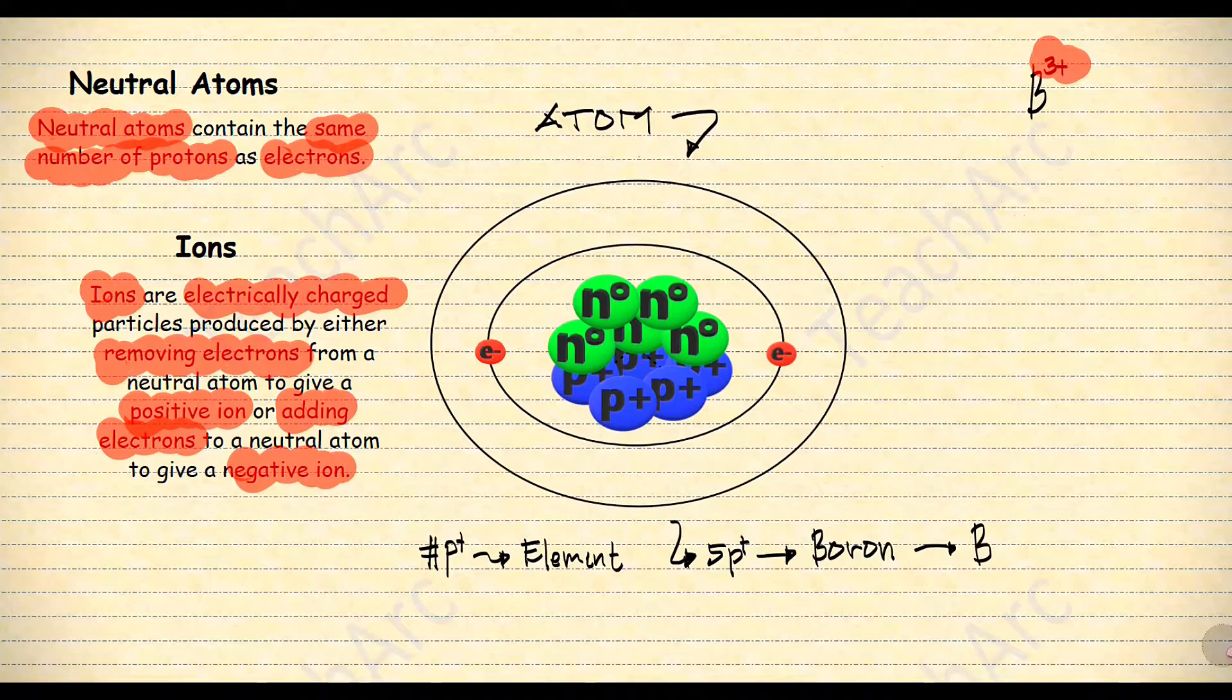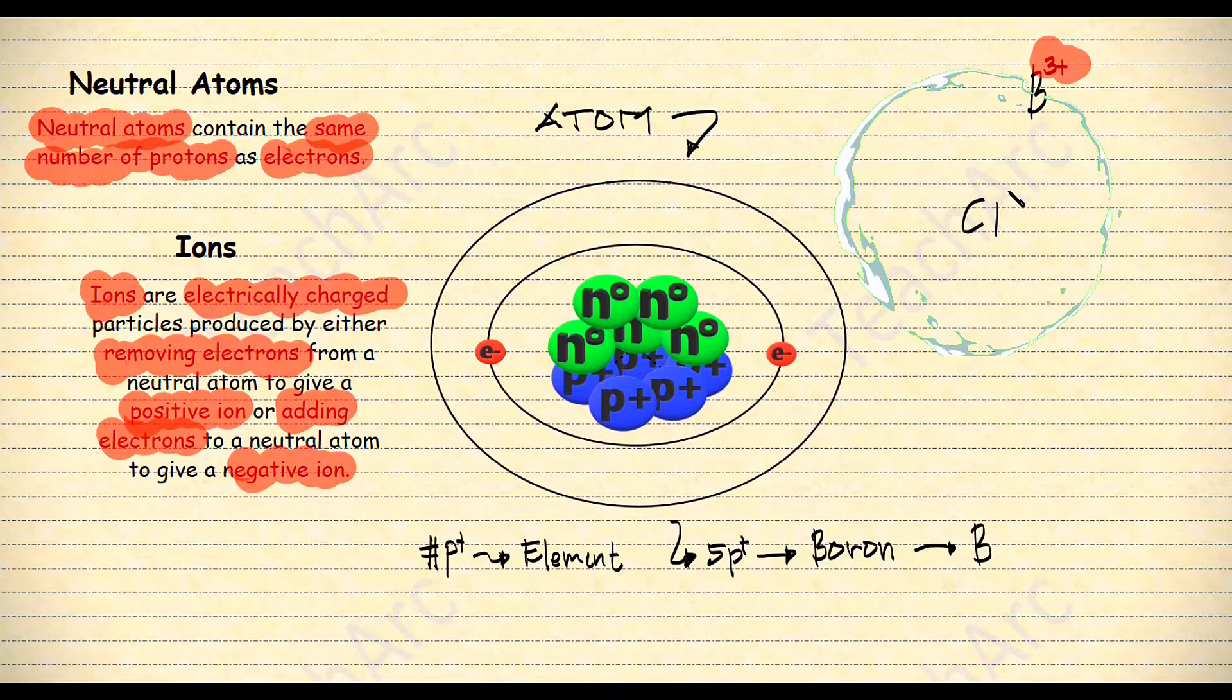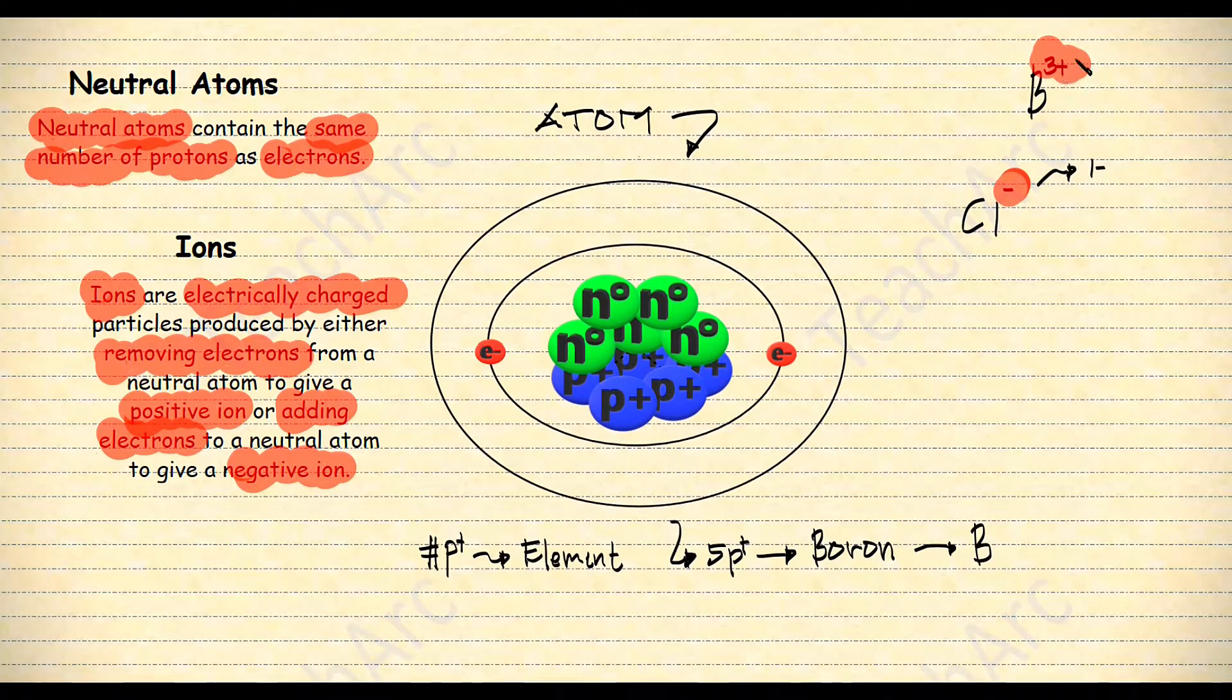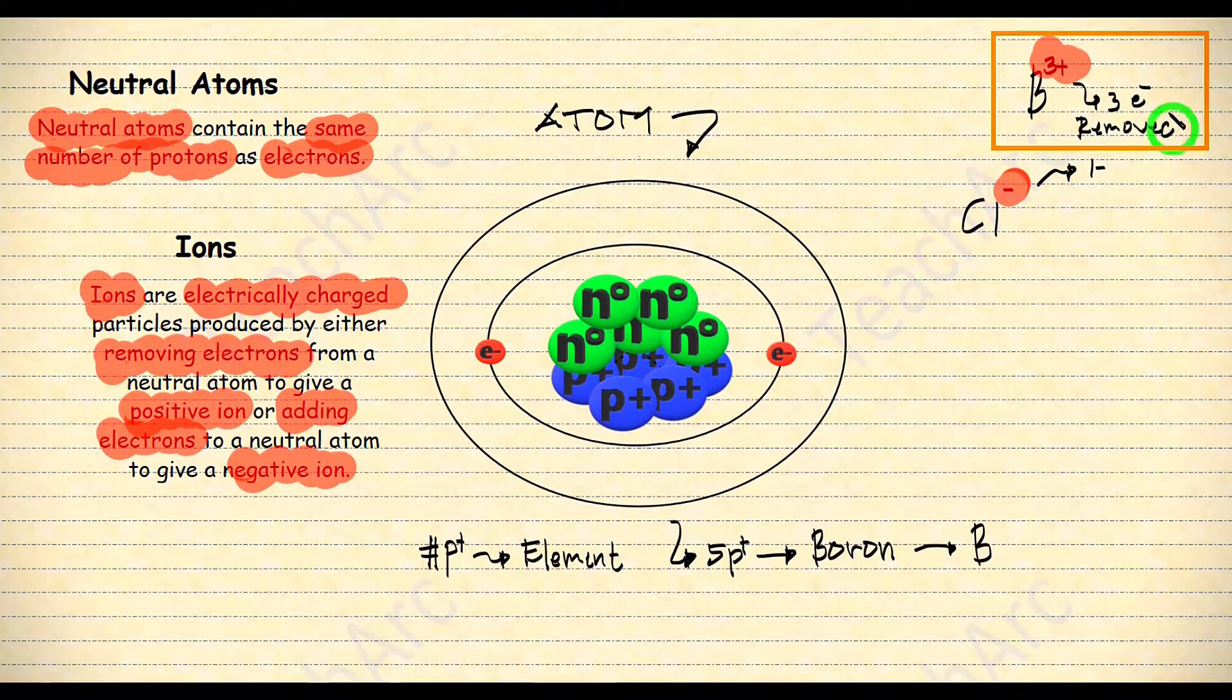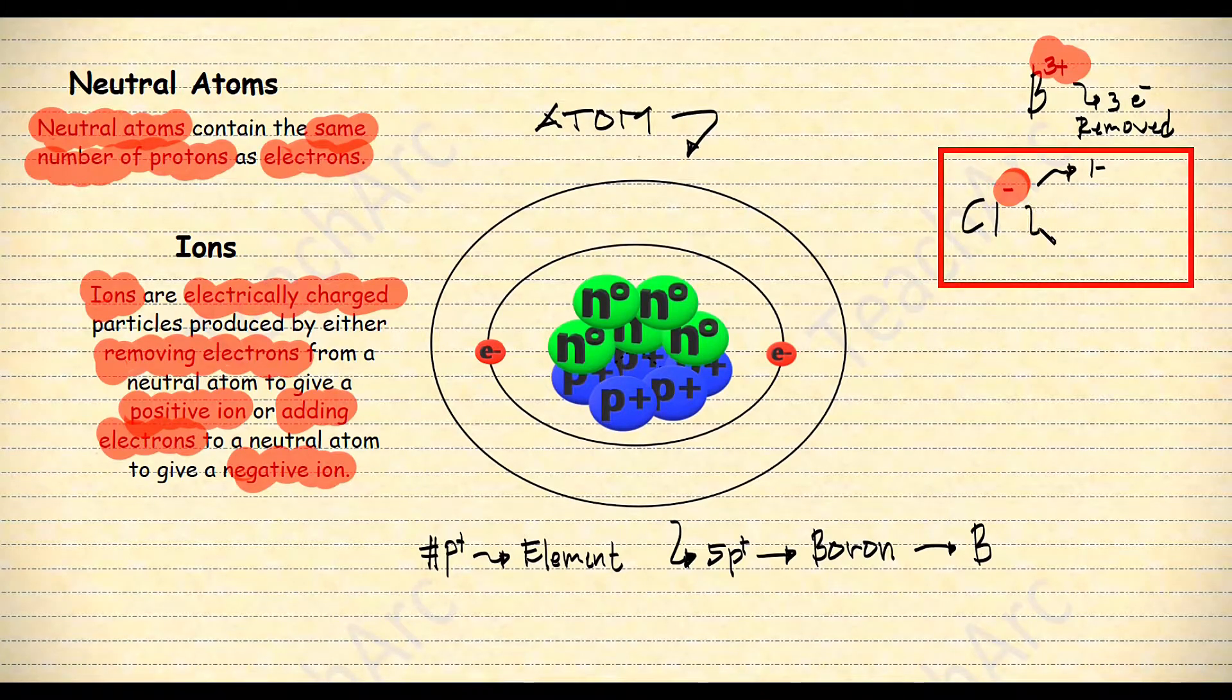I have here another ion we call chloride with a charge of negative, meaning one negative. If no number is written, in our boron ion the 3+ charge indicates that three electrons were removed. Therefore, the 1- here indicates that one electron was added.